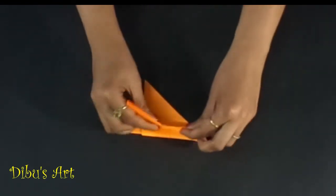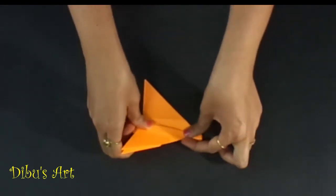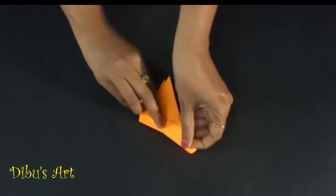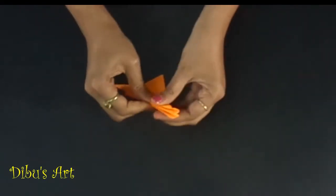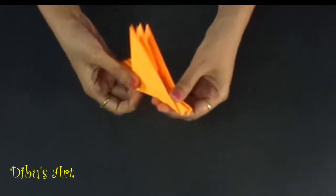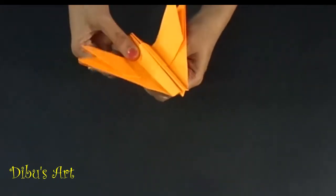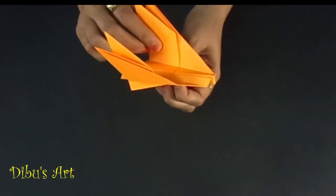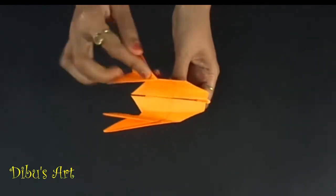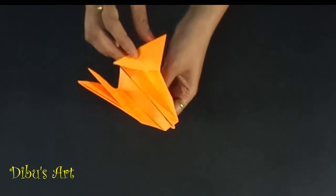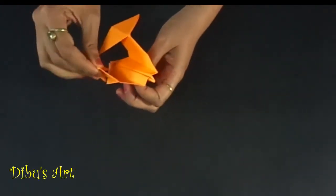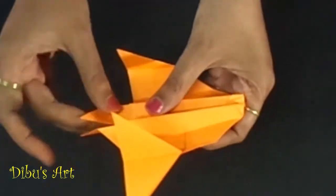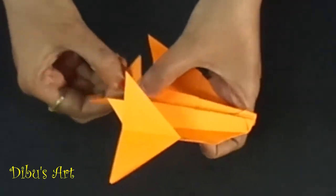Do the necessary adjustments as shown in the video. Fold the paper at the tail to get vertical progression as shown.